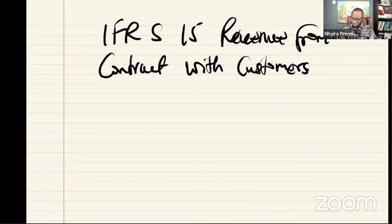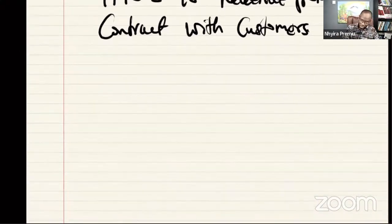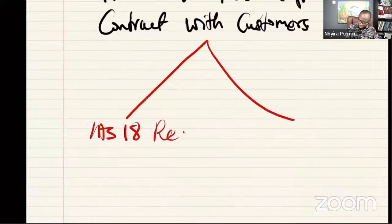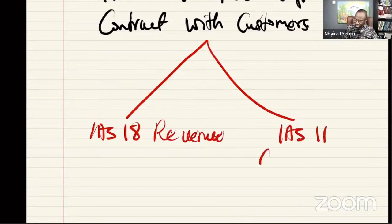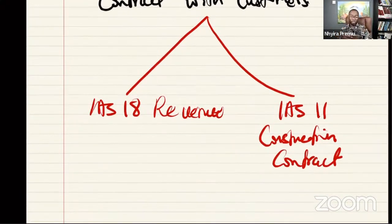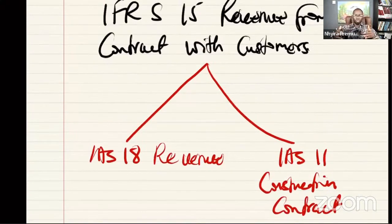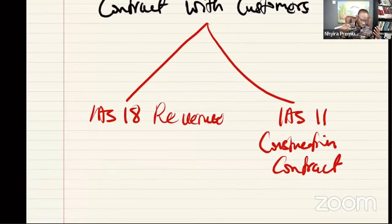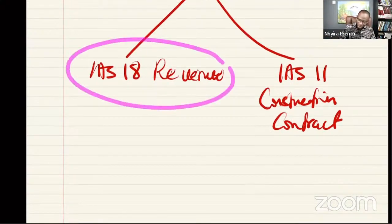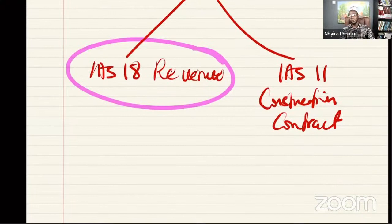IFRS 15 is actually a replacement for two key accounting standards: IAS 18 Revenue, and IAS 11 Construction Contracts. Somebody asked why the need for IFRS 15 - why was it introduced by the International Accounting Standards Board? Why was IAS 18 not sufficient? The idea is that under IAS 18, entities recognized revenue when a transaction takes place, using the accrual concept.